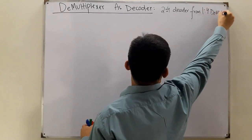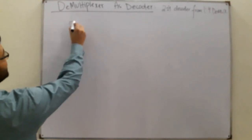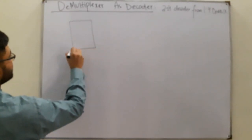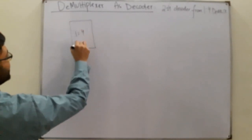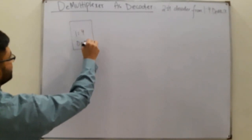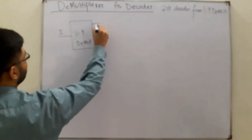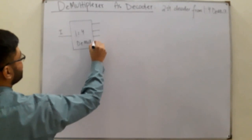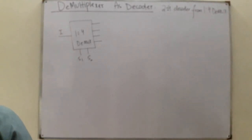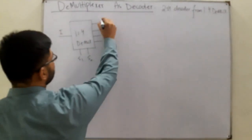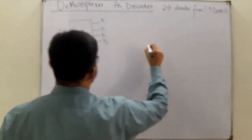Let me draw them both first. This is your 1x4 demux. So you have an input I, and then you have four outputs, and you have two select lines S1 and S0.